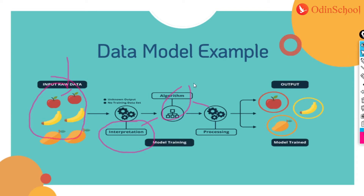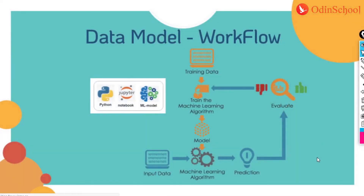In a data model, I first receive the input data. From that data I do some pre-processing. I find out some insights, and after that I apply a machine learning algorithm. This entire step is known as model training. From that I get my output. This is all about data modeling. Let us look at the workflow of how a data model works and how Python plays an important factor in it.